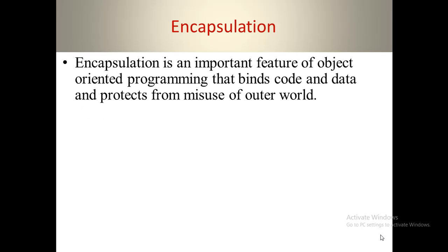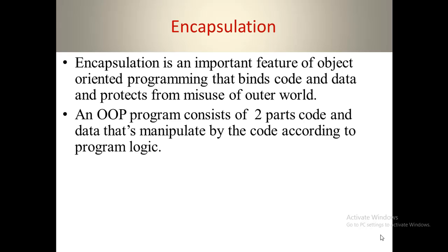Encapsulation is an important feature of object-oriented programming that binds code and data and protects it from misuse by the outer world. An OOP program consists of two parts: number one is code, and number two is data. The data is manipulated by the code according to the program logic.